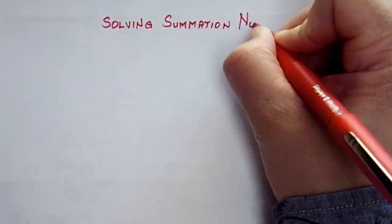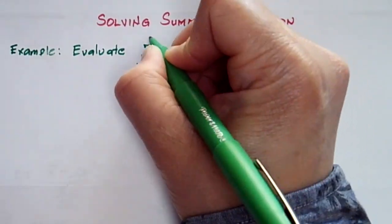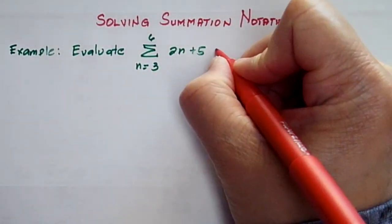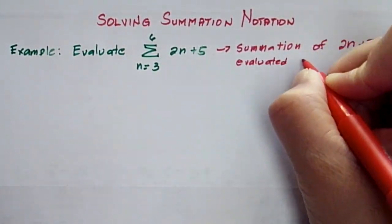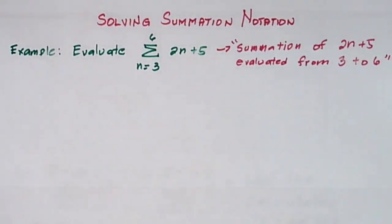Just like any foreign language, solving math problems require you to understand its symbols. In this example, this particular problem is read as summation of 2n plus 5 evaluated from 3 up until 6.